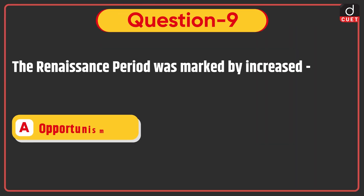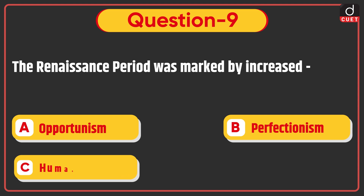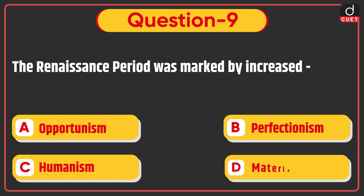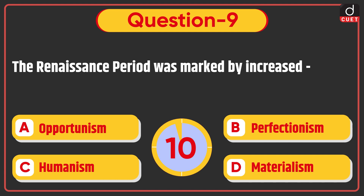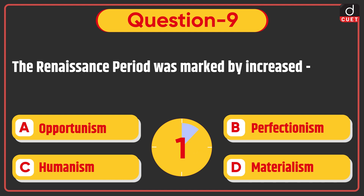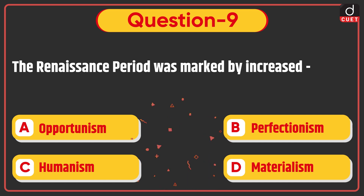The Renaissance period was marked by increased opportunism, perfectionism, humanism, or materialism? The correct answer is option C: humanism.